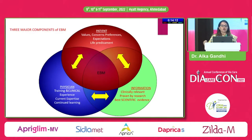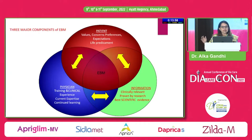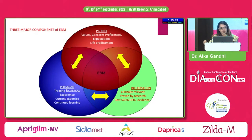There are three main components of evidence-based medicine. First, the physician — their training, clinical experience, current expertise and continued learning. We are all here for continued learning, which is an important part of EBM. Along with that, clinically relevant information proven by research and best scientific evidence. On top of it, the patient's values, concerns, preferences, expectations and life predicament.